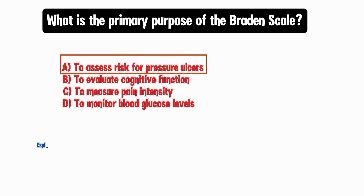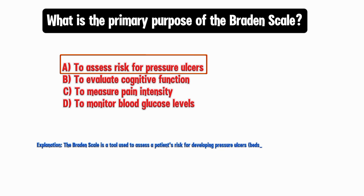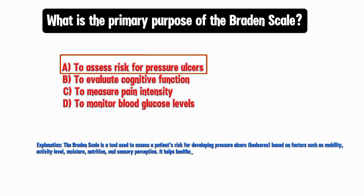Explanation. The Braden Scale is a tool used to assess a patient's risk for developing pressure ulcers, or bed sores, based on factors such as mobility, activity level, moisture, nutrition, and sensory perception. It helps healthcare providers implement preventive measures for at-risk patients.